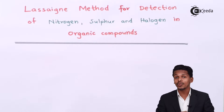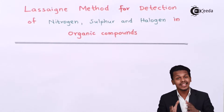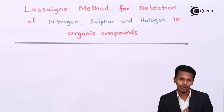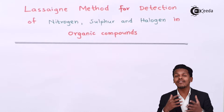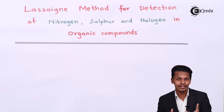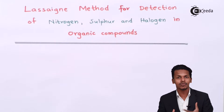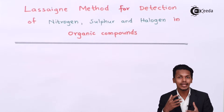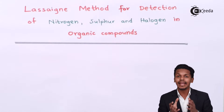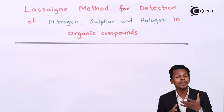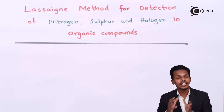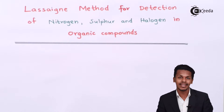In this method we are going to detect whether nitrogen, sulfur, or halogen are present in the organic compound or not. This kind of analysis is basically known as qualitative analysis — meaning we are detecting which element is present in that compound exactly.